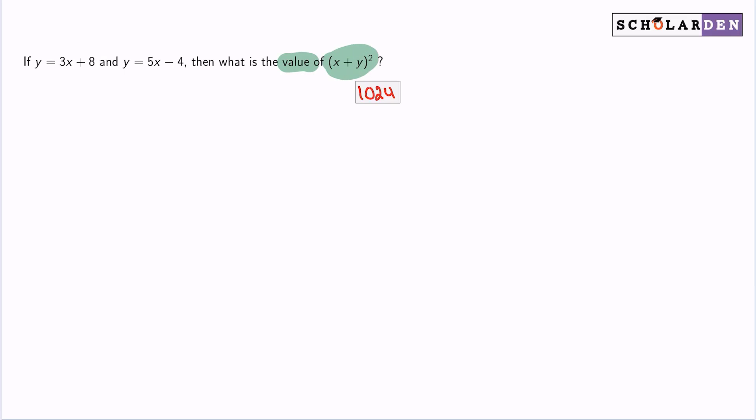So essentially, I'm going to need to know what x and y are, or potentially I will need to know what I get when I combine them together. So two ways of thinking about it. In this problem, it's probably a lot quicker to just determine what y is and what x is, and then we plug them in to find our answer. So there's my plan.